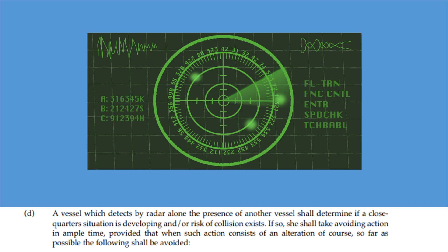We need to determine if a close quarters situation is developing. That means we need to do systematic radar plotting to see whether or not there is a risk of collision. Rule 7, as we've seen, still applies in restricted visibility and it's Rule 7 specifically warns us against making decisions based on scanty radar information alone. If a risk of collision does exist, we should take avoiding action in ample time, this is Rule 8, provided that when such action consists of an alteration of course, we need to avoid doing the following things.